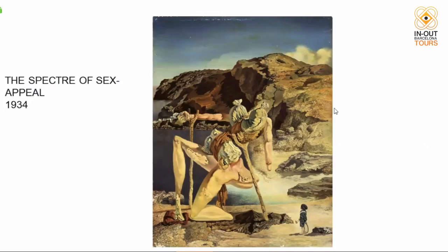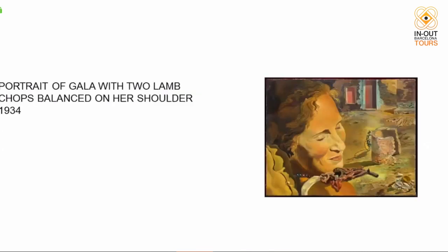You can recognize those rocks in the background — that's clearly the landscape he sees from the window of his studio. The little boy on the right is him, dressed as a sailor, looking at this monster of sex appeal. Dalí was terrified of sex. This monster rises with crutches from the earth. The painting is very small — about eight by six centimeters. We also have 'Portrait of Gala with Two Lamb Chops Balanced on Her Shoulder,' another tiny painting in the museum.